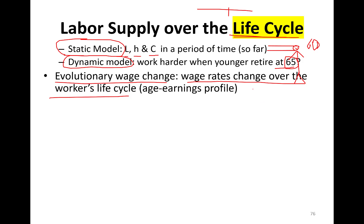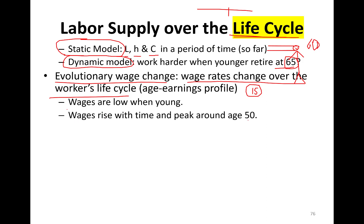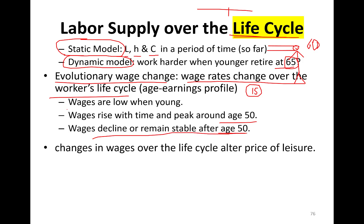For instance, looking at my pay in the last 15 years since I graduated from grad school, there is a huge difference in terms of my earning capability. Wages are low when we are younger, wages rise with time and peak around age 50, and wages decline or remain stable after age 50. So if we draw this — with time on the x-axis and wages on the y-axis — wages are low when you're younger, peak around 50, and then stay constant or go down a little bit before you retire.